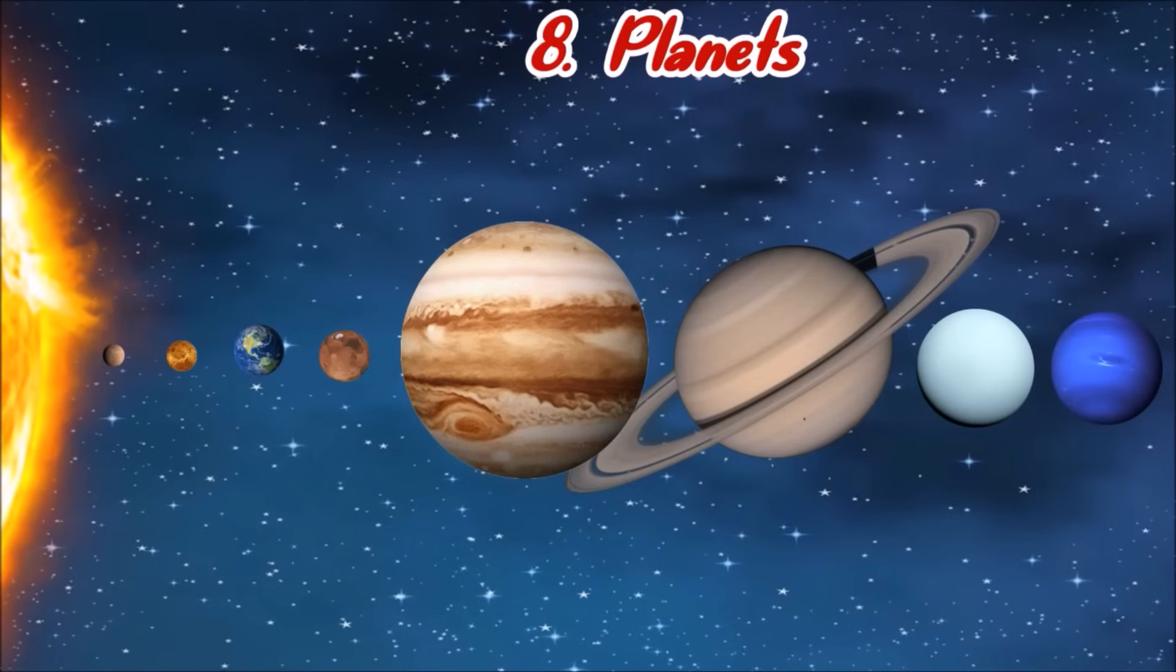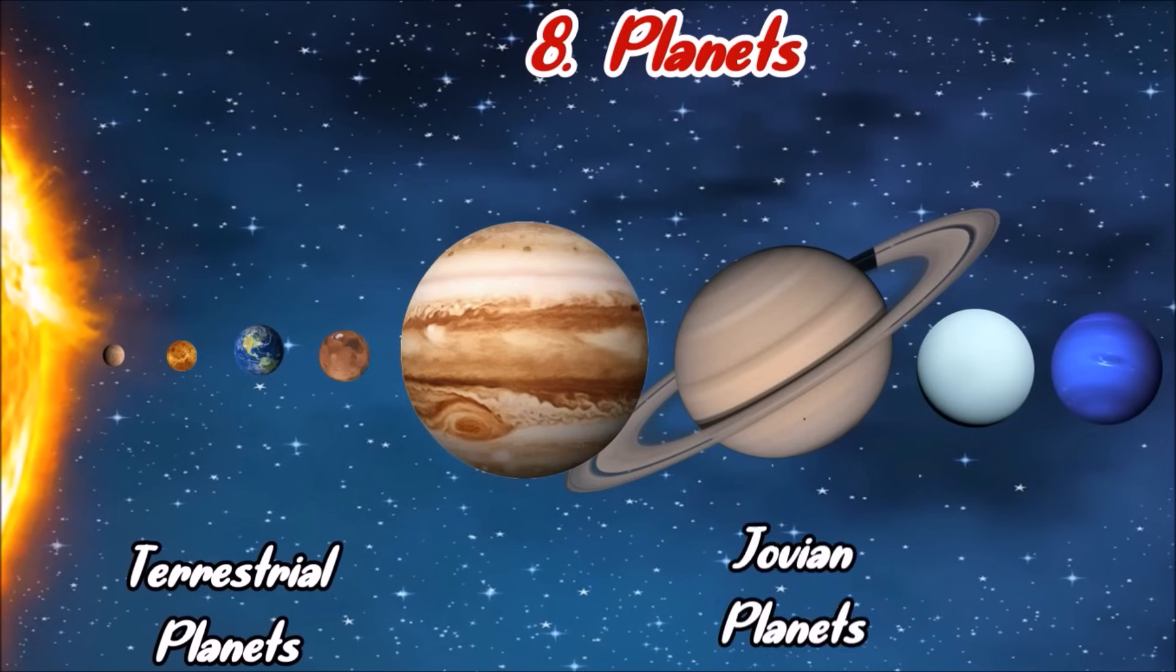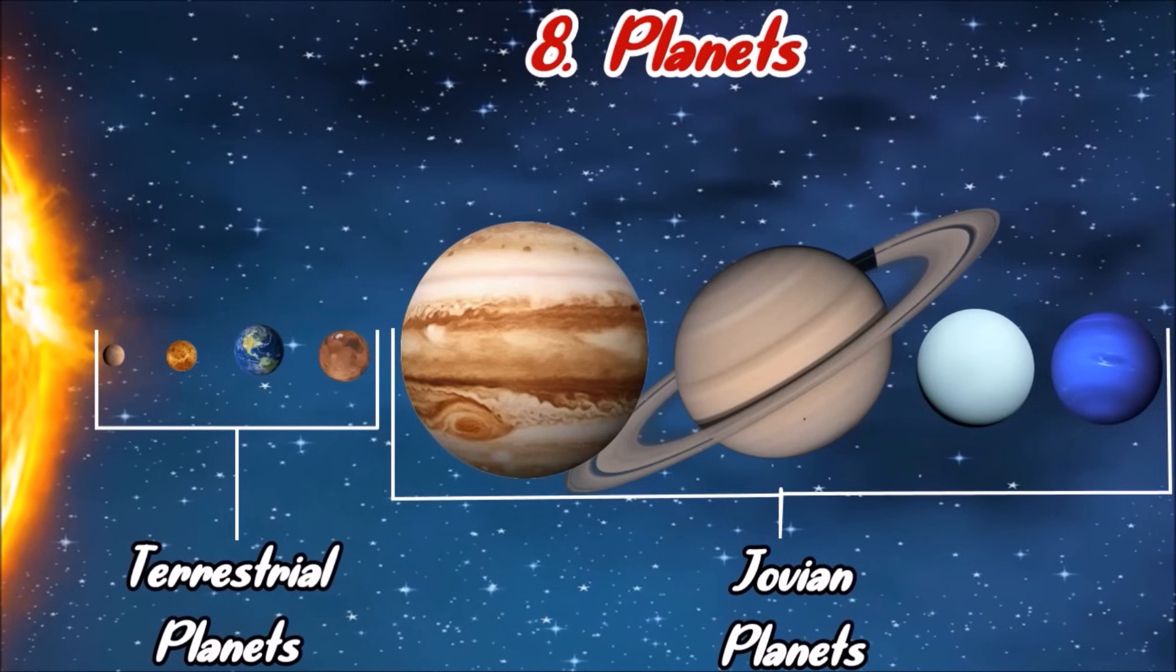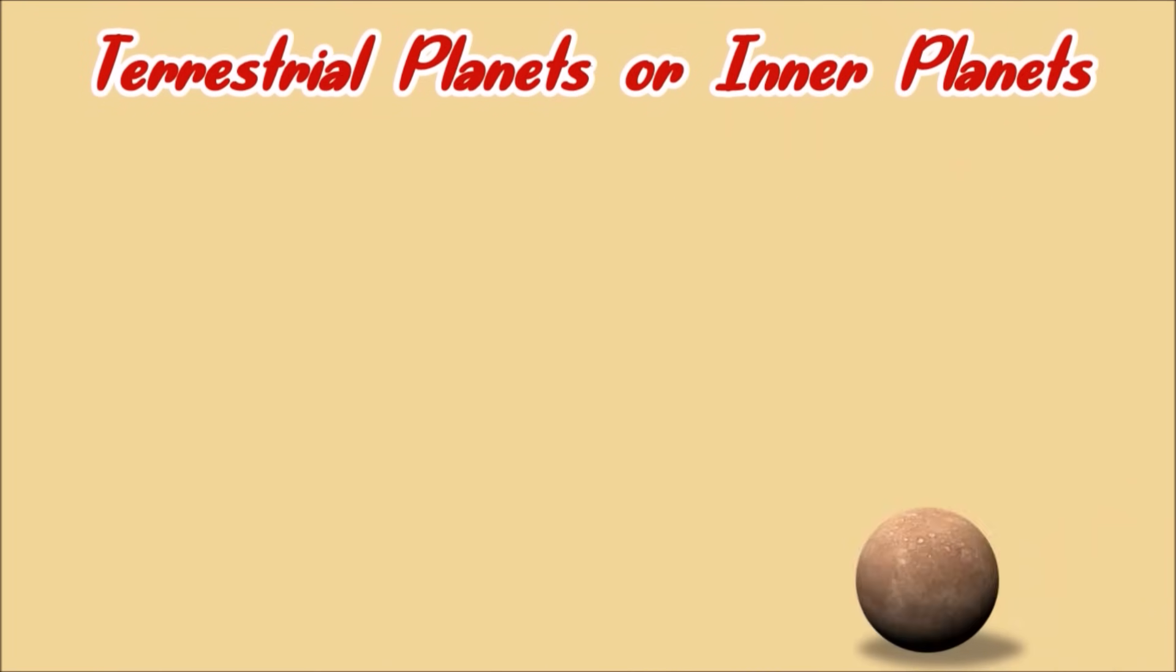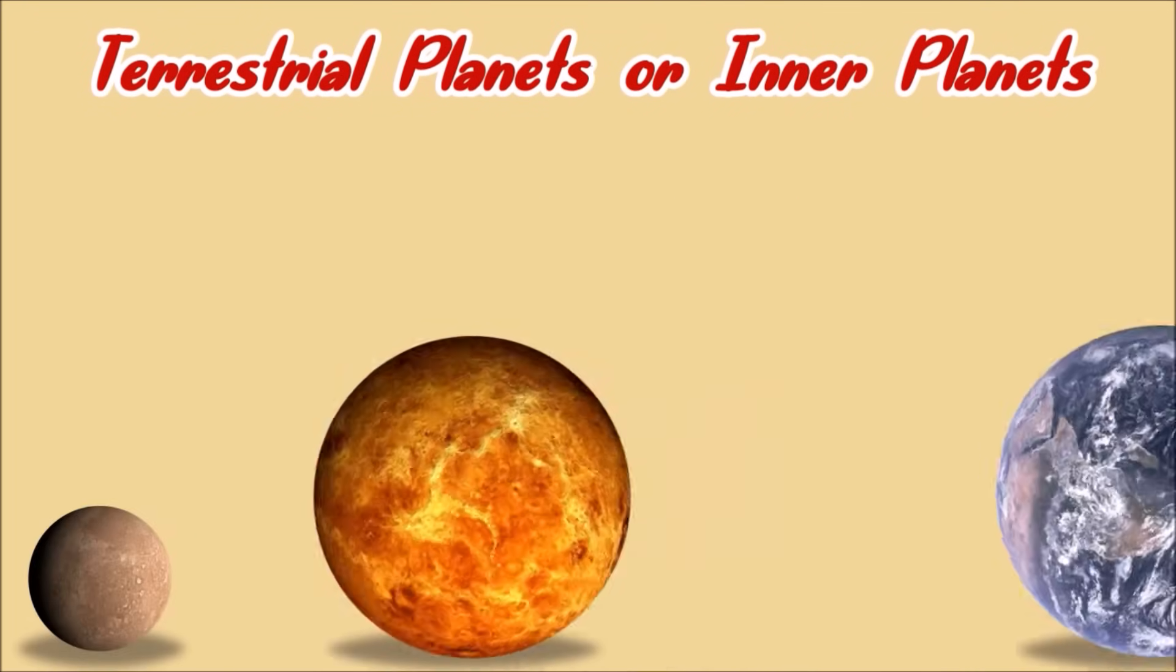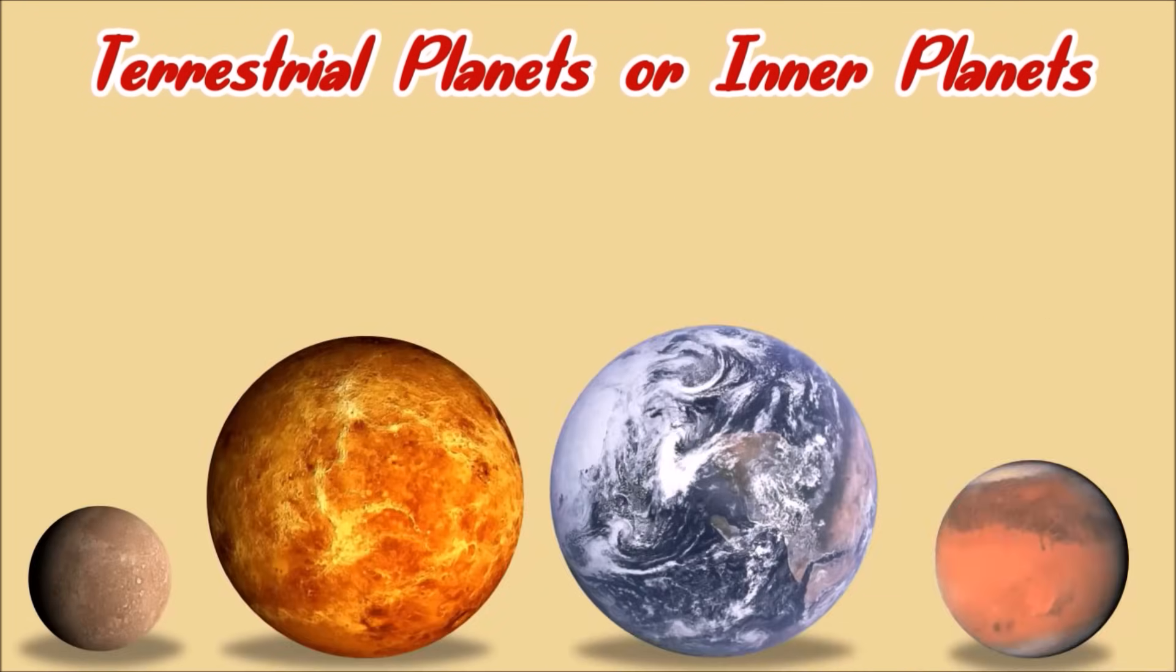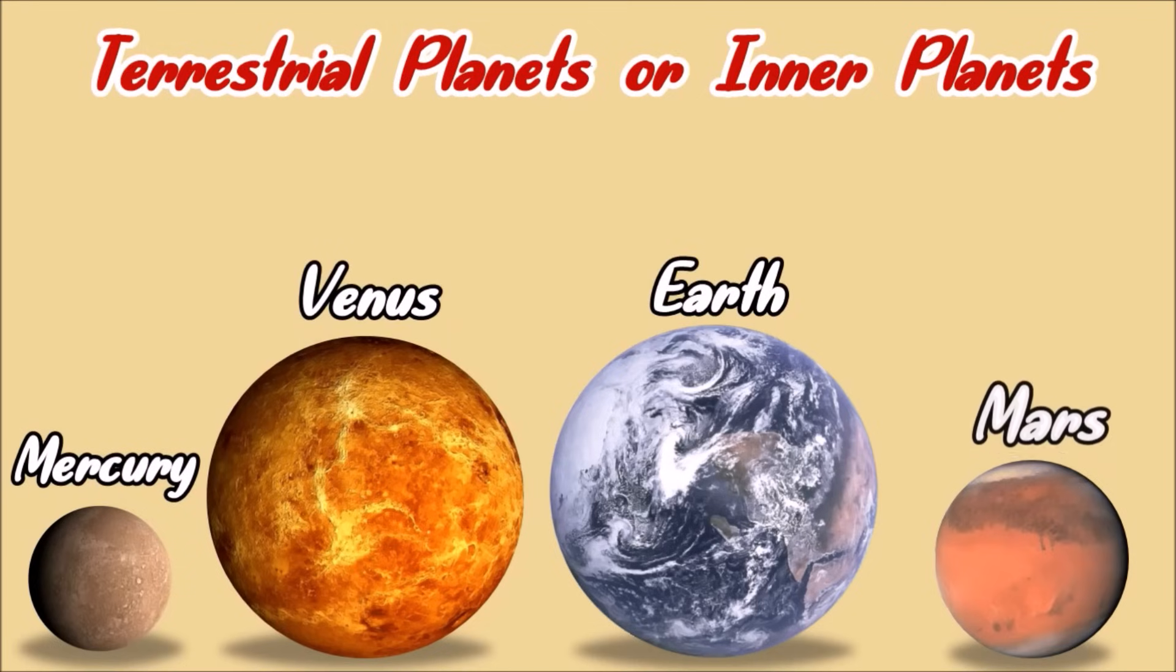Planets are classified as terrestrial planets and Jovian planets. Terrestrial planets are also called the inner planets. Let's talk about the inner planets. These are Mercury, Venus, Earth, and Mars.